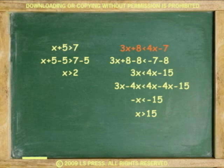Another example: 3x plus 8 is less than 4x minus 7. Subtract 8 and 4x from both sides. Divide by negative 1 to make x positive. Now, x is greater than 15. Notice that because we had to divide by a negative number, the inequality sign changed directions.